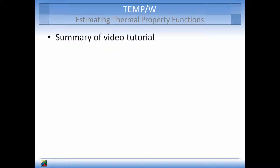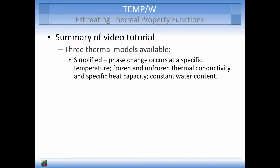To summarize this tutorial, the three main thermal model types in TempW have been described. The first type was the simplified thermal model, which assumes that phase change occurs at a specific phase change temperature instead of a range of temperatures. Latent energy storage changes are calculated assuming that all water in the pore space freezes or thaws when the phase change temperature is crossed. The thermal conductivity and volumetric specific heat capacity are uniquely defined for the frozen and unfrozen states, and the volumetric water content is assumed constant.